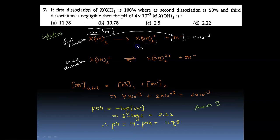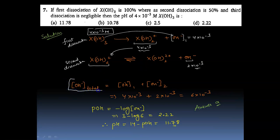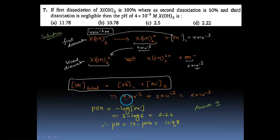This intermediate dissociates in the second step at only 50%, so the OH⁻ contributed is half of 4×10⁻³ = 2×10⁻³. The third step is neglected as its dissociation is negligible. Therefore the total [OH⁻] comes from the first step (4×10⁻³) and the second step (2×10⁻³), giving a total of 6×10⁻³ M.